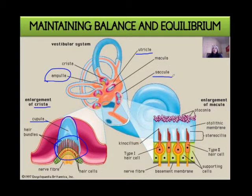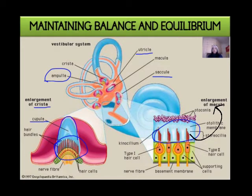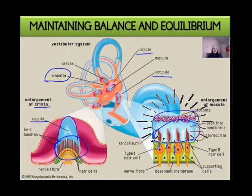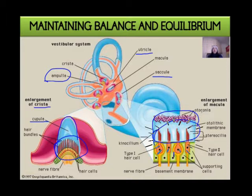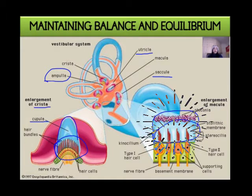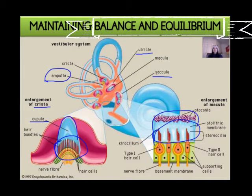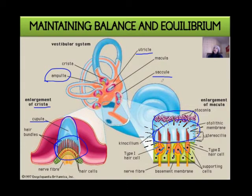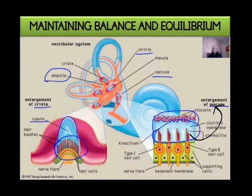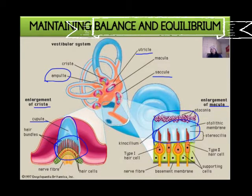Also lying at the base of the semicircular canals are two other swellings called the utriculus and the sacculus. They also contain their own receptor cells or hair cells, which we call the macula. Surrounding the macula is also a gel-like or jelly-like substance.